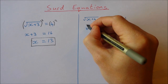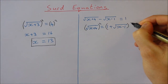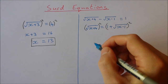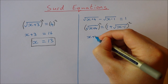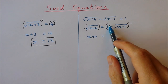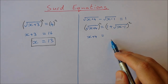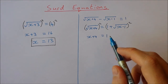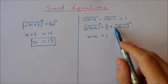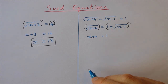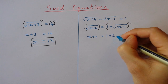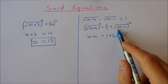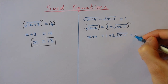Now I have it isolated, I can square both sides. The square root of x plus 4 squared is x plus 4. Squaring the right-hand side — we have two terms: 1 and the square root of x minus 1. It's the square of the first, 1 squared equals 1; twice the product, which is 2 times the square root of x minus 1; and the square of the square root of x minus 1, which is x minus 1.